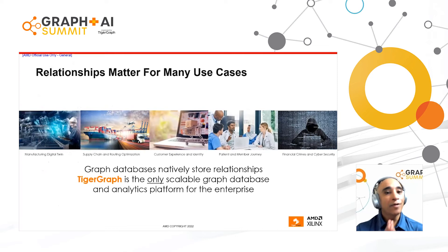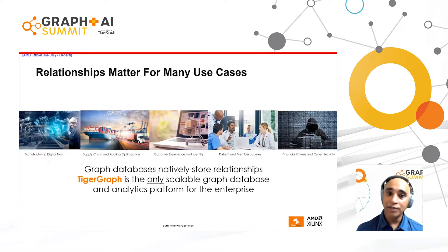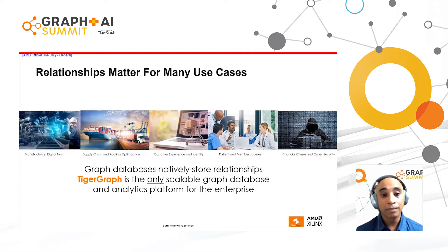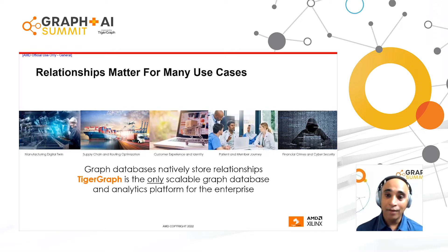Relationships matter — not just for personal reasons, but also in a lot of business cases, whether you're talking about manufacturing digital twins, supply chain and routing optimization, customer 360 or customer experience and identity, patient and member journey, solving financial crimes, or protecting against financial fraud. All of these relationships matter, and that's why graph databases natively store relationships. TigerGraph is the only scalable graph database and analytics platform that is ready for the enterprise to scale for all these different use cases.